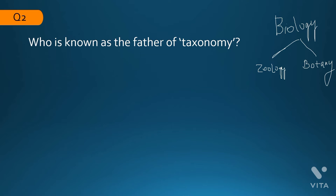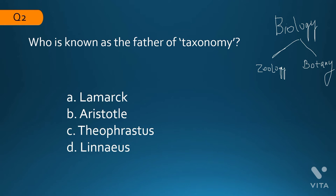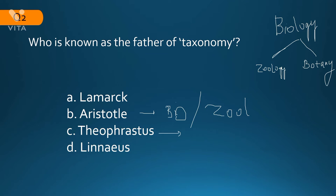The next question: who is known as the father of taxonomy? The options are Lamarck, Aristotle, Theophrastus, and Linnaeus. Aristotle is the father of biology and zoology — zoology is the branch of biology dealing with the study of animals or human beings. Theophrastus is the father of botany, the branch dealing with the study of plants. The correct answer is Linnaeus — Carl Linnaeus is known as the father of taxonomy.